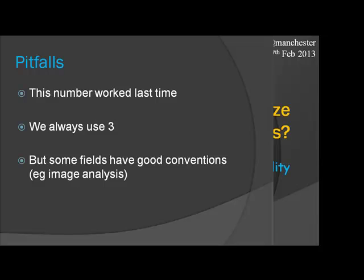If last time you did the study it was just significant, that means you've got about 50% power if you repeat it with the same number — because next time it might be just a little bit bigger or smaller. So what worked before isn't necessarily a good guide. You need to go back and look at what the variance was and what effect size you're looking for. That result might have been a lucky day when you got a really big effect.